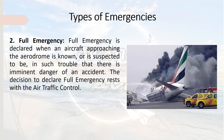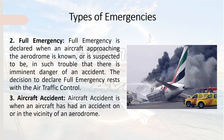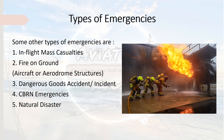Full emergency is declared when an aircraft approaching the aerodrome is known or suspected to be in such trouble that there is imminent danger of an accident — an upgraded version of local standby. The decision to declare full emergency again rests with the air traffic control. Number three is aircraft accident, a state in which the aircraft has had an accident on or in the vicinity of the aerodrome. Other emergencies include in-flight mass casualties due to turbulence or food poisoning.